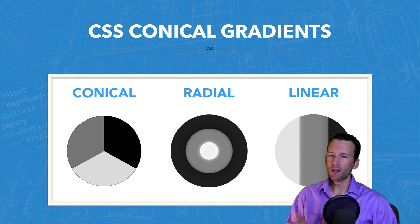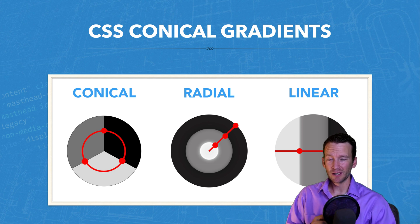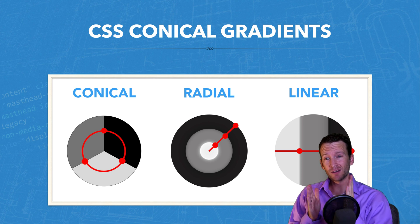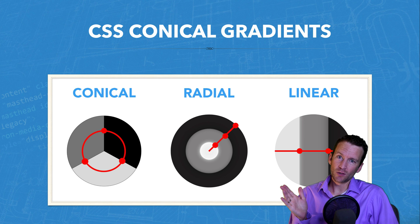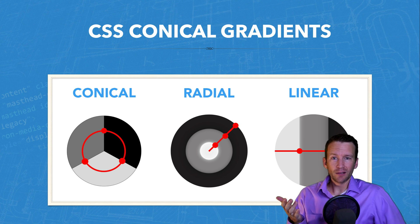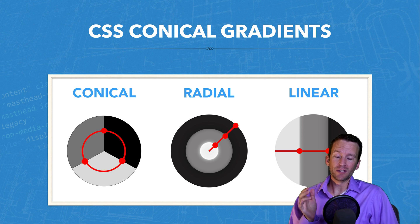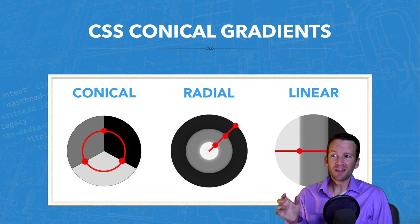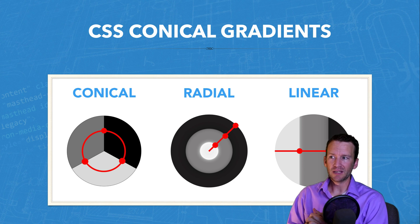With color stops, you can see the conical gradient is set up with three color stops, each at roughly 33%, and it wraps around the area. The radial gradient starts at the center and works toward the outer edges, while the linear gradient goes from one edge all the way to the other side. That's the key difference between the three main gradient types.